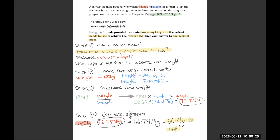Now we have our target BMI and our height, so we need to rearrange the equation, which is what I have done in step 3. You rearrange it to make the weight the subject. The weight is 73.258 kilograms. We know they currently weigh 140, and they want to weigh 73.258. So our answer is 66.7 kilograms to one decimal place. The answer is correct because it's given in kilograms and to one decimal place.